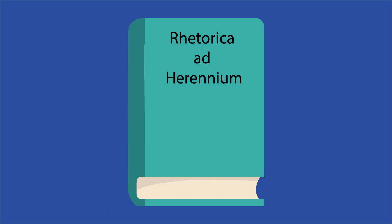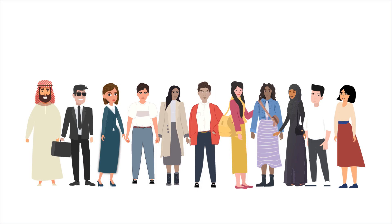The oldest surviving definition of metonymy in Latin is in the Rhetorica ad Heronium, a book on rhetoric written in the late 80s BC. The definition has remained relatively the same since this first mention.